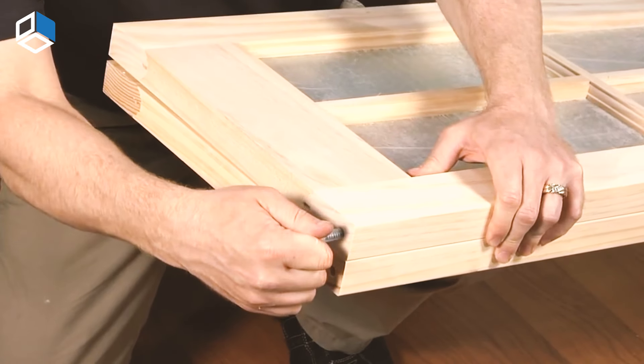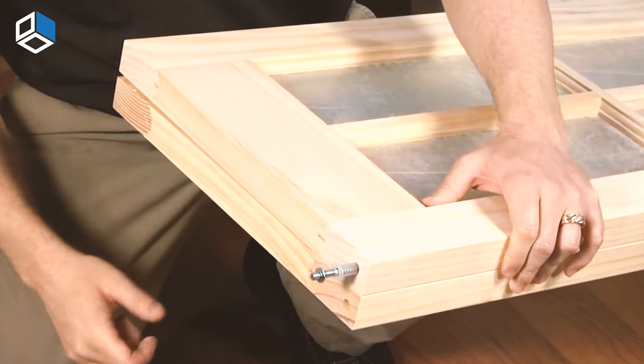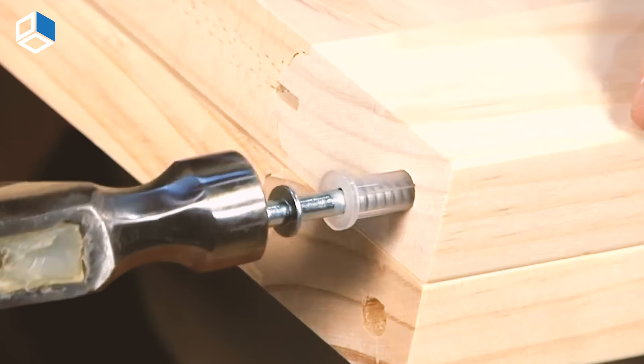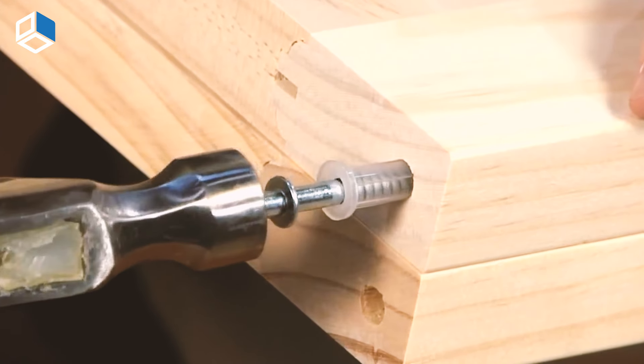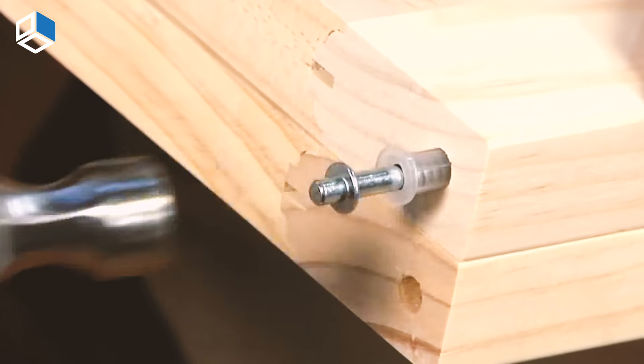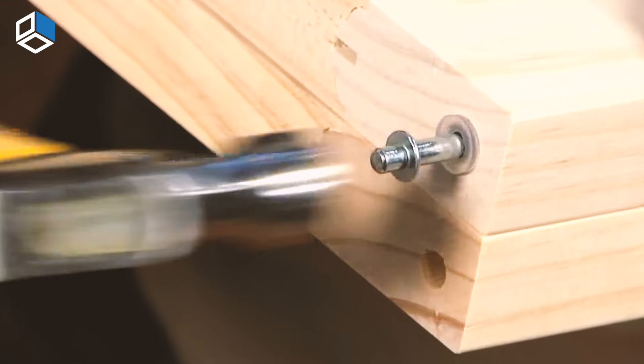Insert the top pivots. There are two different kinds of top pivots in your hardware pack. The one with a narrower top should be installed on the side of the door that will remain stationary by the door jamb.